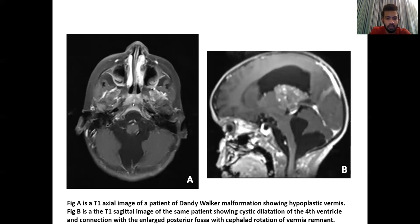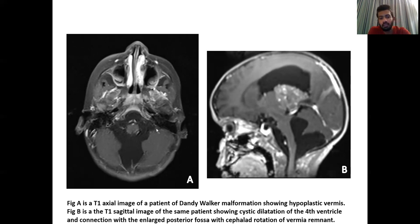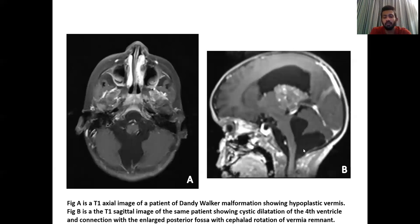Figure A is a T1-weighted axial image of a patient with Dandy-Walker malformation showing a hypoplastic vermis. Figure B is a T1-weighted sagittal image of the same patient showing cystic dilatation of the fourth ventricle in connection with an enlarged posterior fossa with cephalad rotation of the vermian remnant. An incidental finding was a choroid plexus papilloma in this patient.